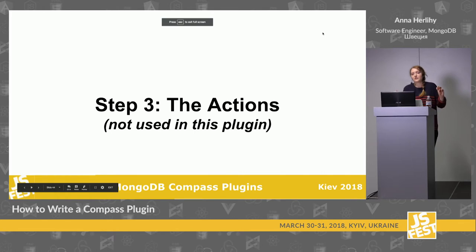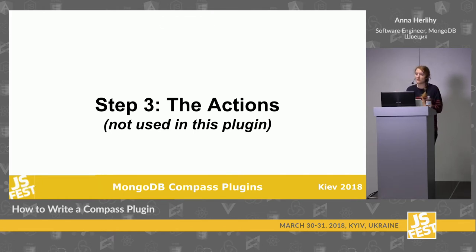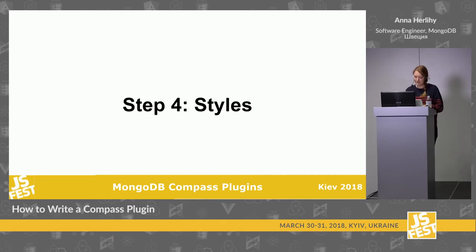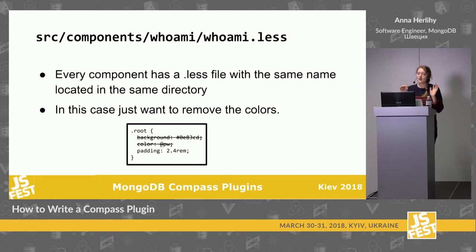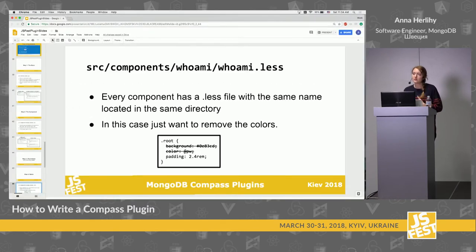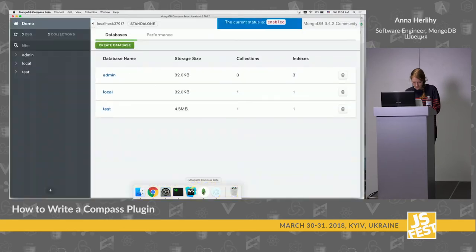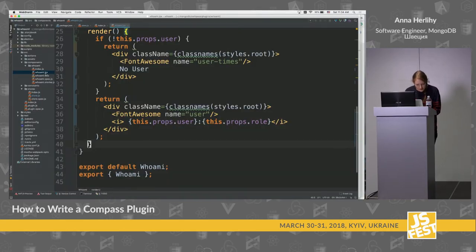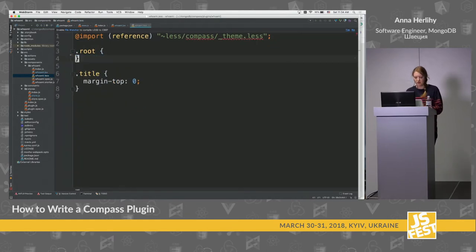Next in the process of writing a plugin would be writing your actions, which I'm not going to do because I don't have any. Same with styles — I pretty much just want to get rid of all styles and let the Compass default styles take over. It's a tiny thing in the corner so I don't want to do anything fancy. The style files are in Less and are right next to the component inside the folder. This is constructed this way because we're using Webpack to build it. The nice thing about Webpack is it can run on its own and will automatically recompile whenever you save, so you can see what's happening in real time.